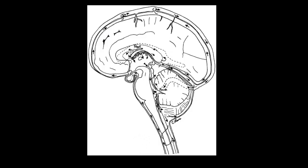A communicating hydrocephalus is where the ventricles communicate — there's no blockage between the lateral, third, and fourth ventricle — and the problem is usually out in the arachnoid granulations. The two conditions we've talked about in the subarachnoid space are meningitis and subarachnoid hemorrhage. Either an infection or bleeding can cause scarring of these arachnoid granulations, so CSF can't get out into the superior sagittal sinus, and the pressure backs up everywhere — both into the subarachnoid space and into the lateral ventricles.